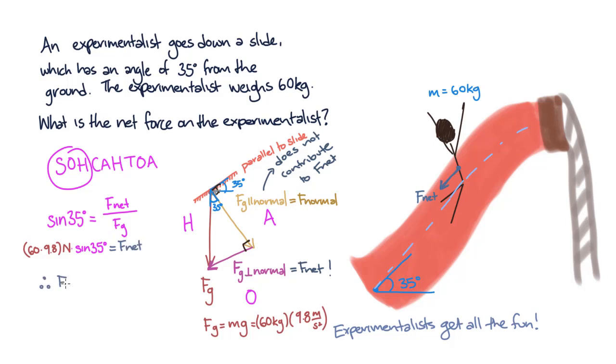And this is equal to 337 newtons, and we have our answer. Now, if we wanted to find the acceleration of the experimentalist, we know that the acceleration is equal to force divided by mass. So we plug in 337 newtons divided by 60 kilograms, and that gives us 5.6 meters per second squared.